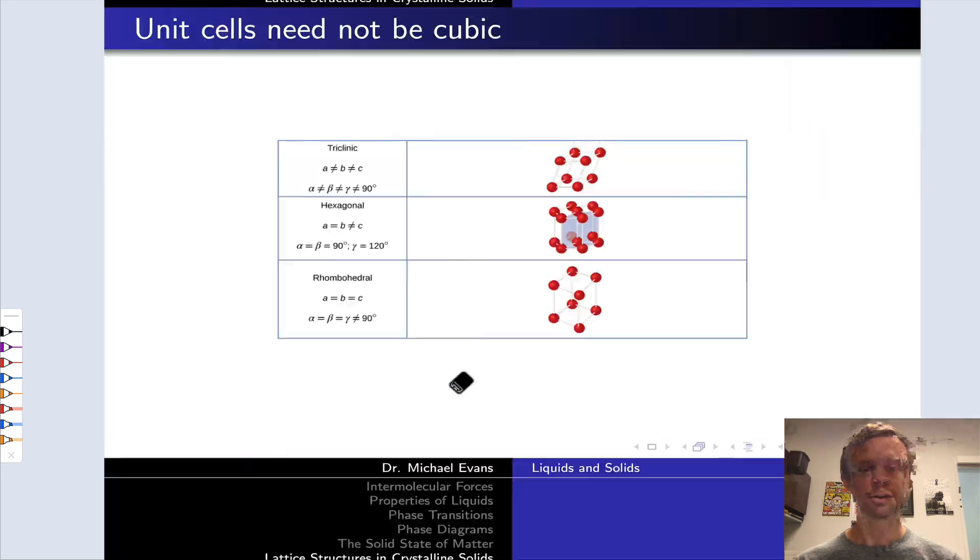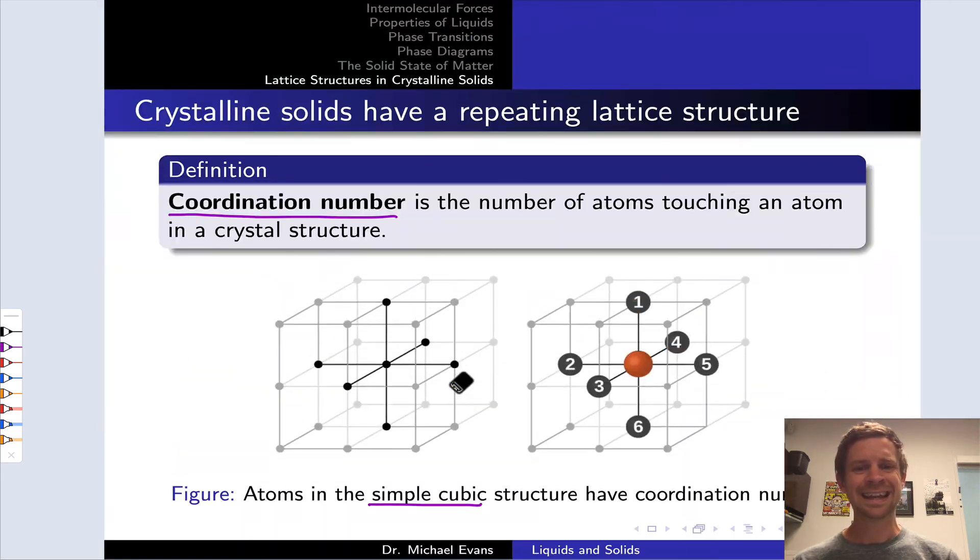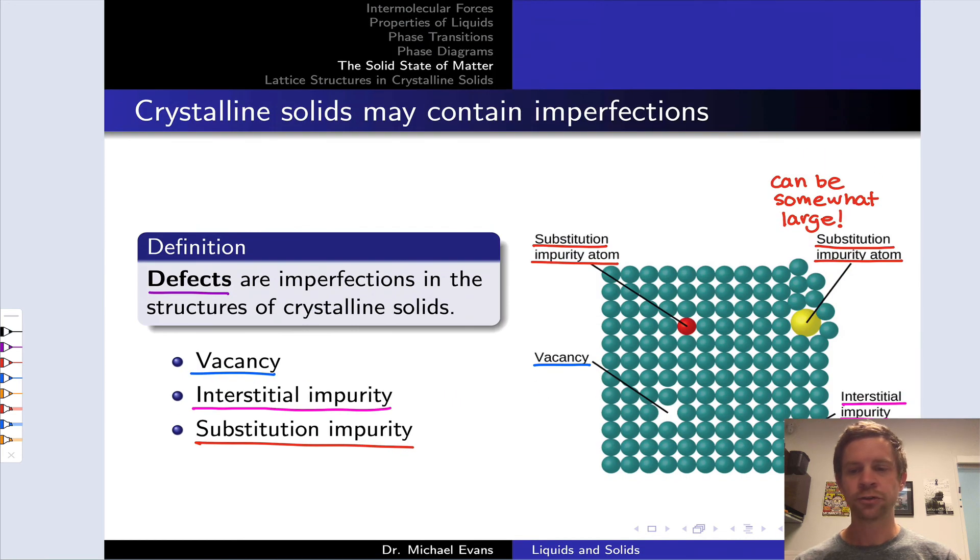They act like interstitial impurities. Recall that we saw way back in the discussion of vacancies that impurities can get into crystal structures in locations between the atoms within the lattice, and these small interstitial impurities don't really disrupt the lattice. This last practice problem is a great example of that phenomenon in action.